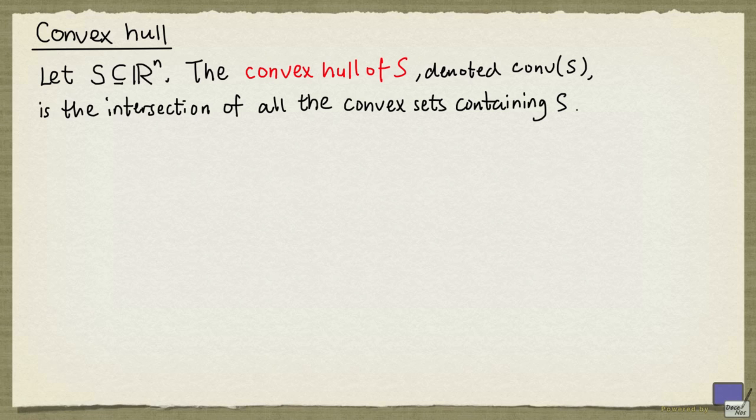So if S is a subset of Rn, the convex hull of S, denoted conv(S), is the intersection of all the convex sets containing S.